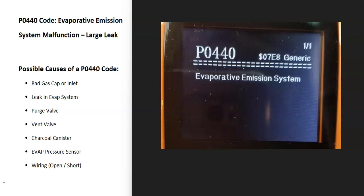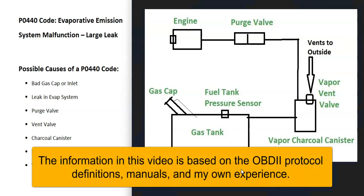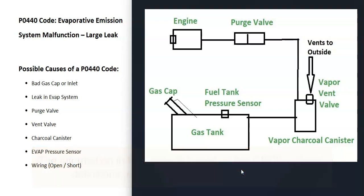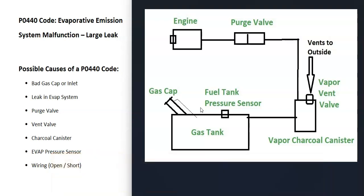Modern vehicles have what's called an EVAP system that basically takes all the gas vapors from the gas tank and feeds them back up to the engine to get burnt off so they don't escape into the atmosphere. For some reason, the computer is seeing a problem inside of this. Depending on the vehicle, the year, the make, there can be some differences inside of the EVAP system, so it's always a good idea to get a diagram for your specific vehicle.